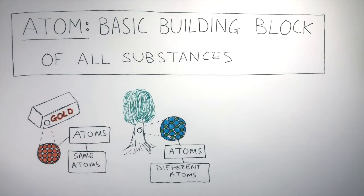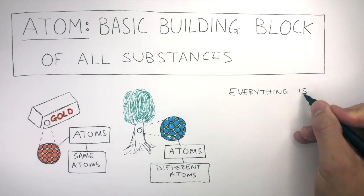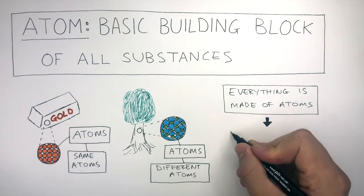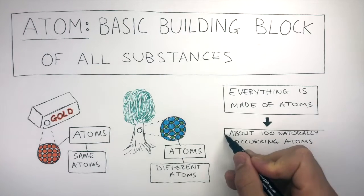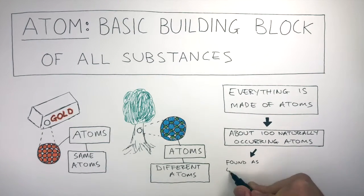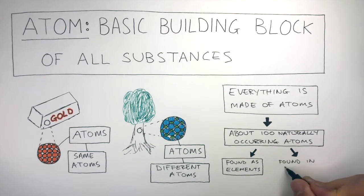So we've established now everything is made of atoms. And there are about 100 naturally occurring atoms. Some are found as elements and some are found in compounds. For the remainder of this video, we're now going to understand the difference between what an element is and what a compound is.